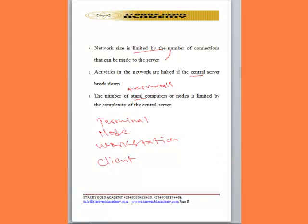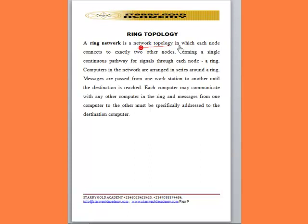Ring topology is a network topology in which each node connects to exactly two other nodes, forming a single continuous pathway for signals or data through each node, which eventually forms a ring. Computers in the network are arranged in series around a ring, and messages are passed from one workstation to another until the destination is reached.